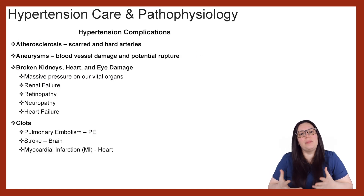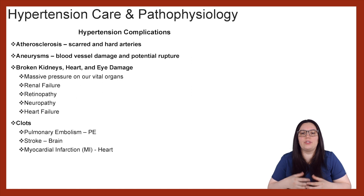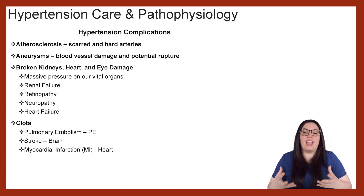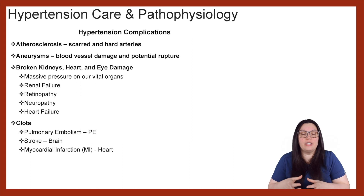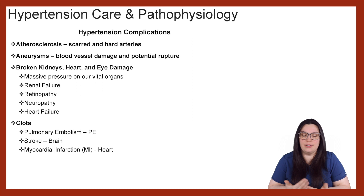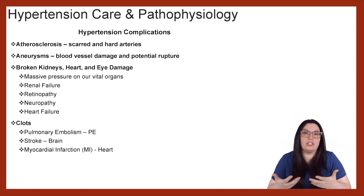So let's talk about hypertension complications. We have arteriosclerosis — that's scarred and hardened arteries that occur because of hypertension. There's also a risk of aneurysm development — that's blood vessel damage, and if it gets so damaged it can eventually rupture, so a ruptured aneurysm could be a complication of hypertension.